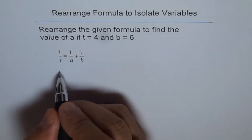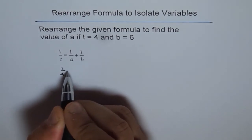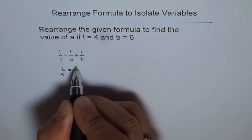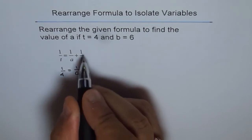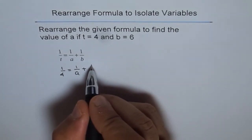So if I substitute 4, I get in this equation 1 over 4 equals 1 over A plus, instead of B, I am writing 6, 1 over 6.